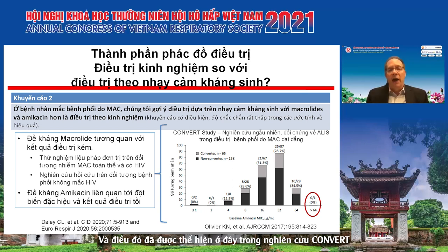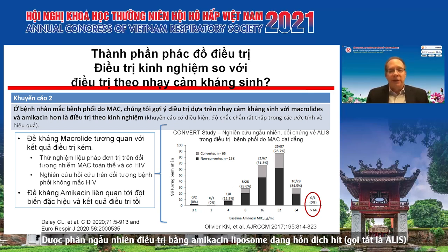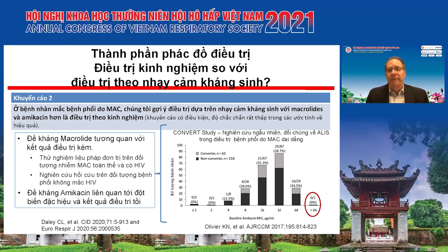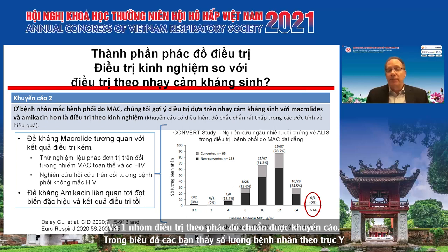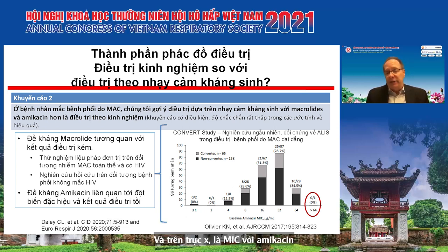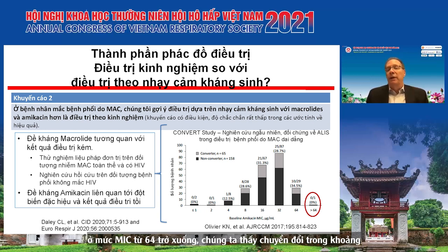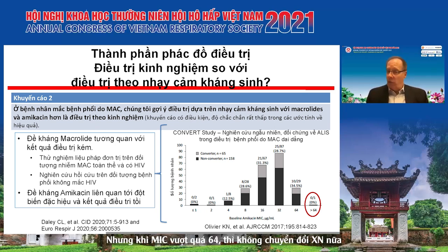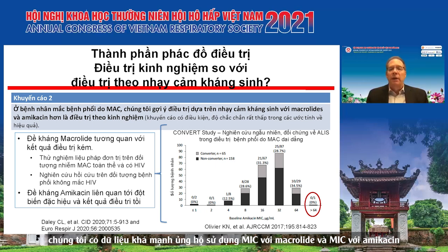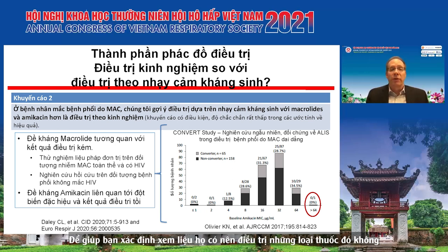This was demonstrated in the CONVERT study, which randomized patients with refractory MAC disease to receive amikacin liposome inhalation suspension (ALIS) versus guideline-based therapy alone. The figure shows amikacin MICs on the x-axis versus number of patients on the y-axis, with black bars indicating non-converters and gray indicating converters. Culture conversion occurred at roughly the same rate up to an MIC of 64, but the one patient above that threshold did not convert. These data support using the macrolide MIC and amikacin MIC to determine whether those drugs should be included.